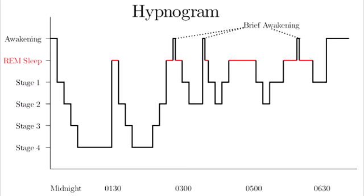Sleep stages and percentage of total sleep in young adults: N1 (5%), N2 (45%), N3 (25%), REM (25%). Awake with eyes open shows beta waves (highest frequency, lowest amplitude). Awake with eyes closed shows alpha waves. Stage N1 (light sleep) shows theta waves.